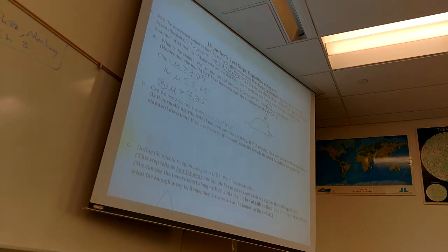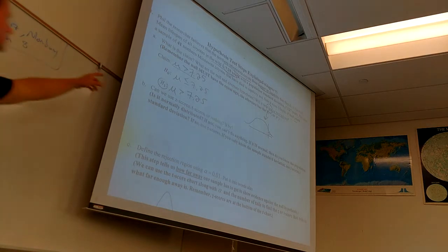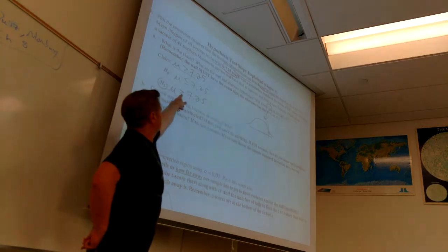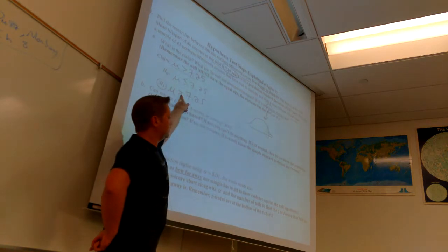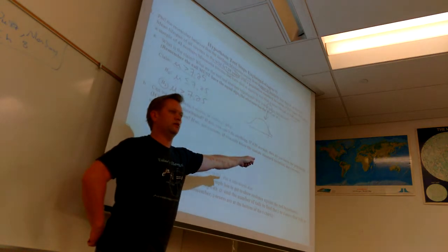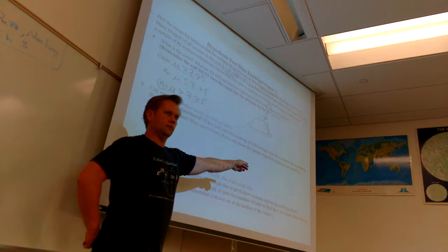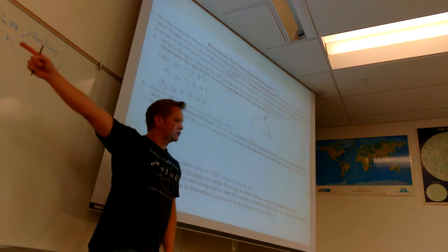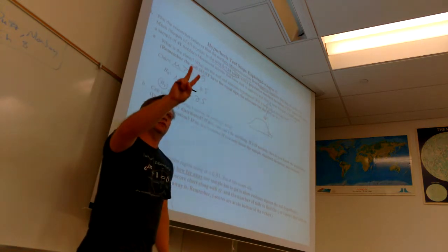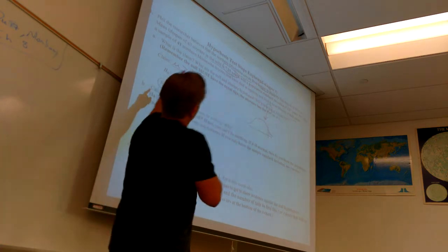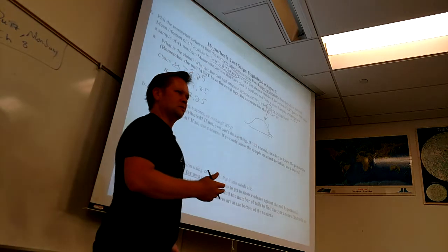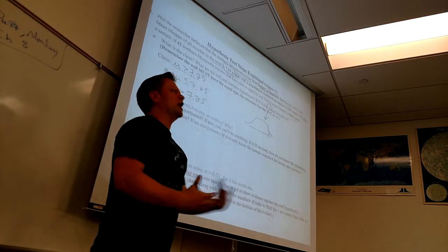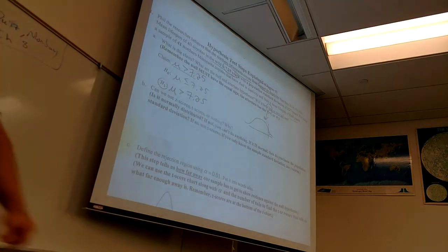The H1 tells me how many tails the test will have, because it shows me where evidence is required. To show evidence that it's greater than, the sample has to be way up there. If it was less than, it would be the other direction. If it was not equal to, it could be either way — that would be a two-tail test. If Phil said they live a different amount of time, that would be mu not equal to — a two-tail test.